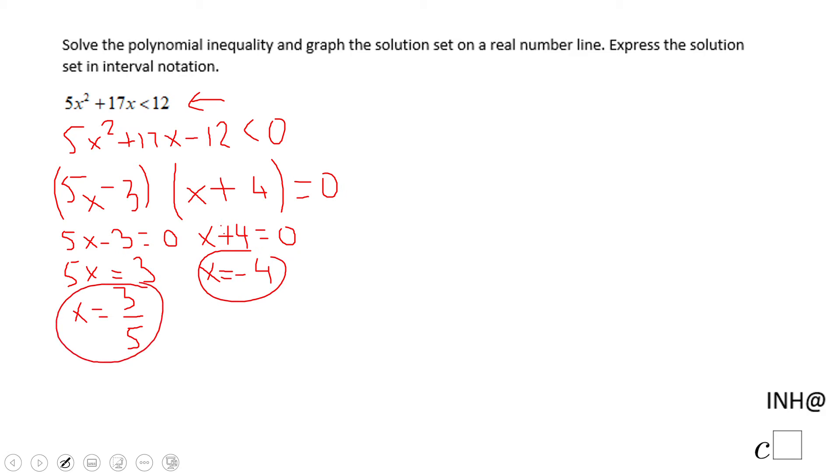I'm going to use now the sign table to identify the interval on which this polynomial is less than zero. I'm going to call this polynomial f(x). Let's put these two zeros on the table: the first one will be -4 and the second one 3/5.